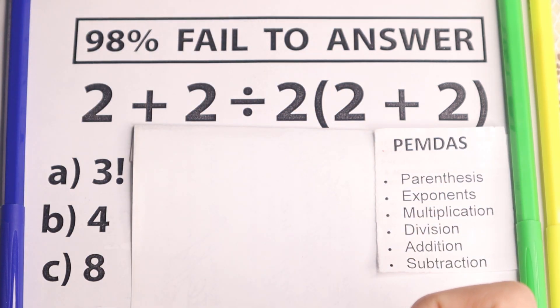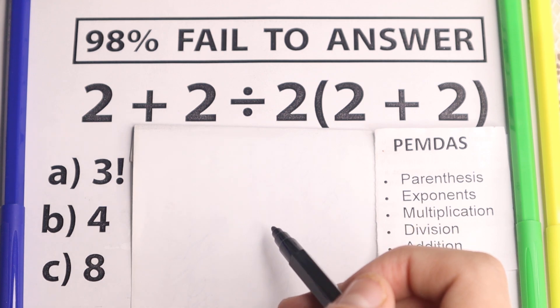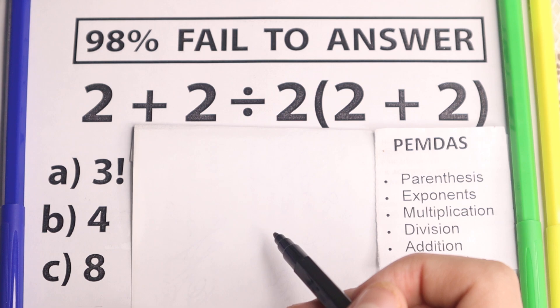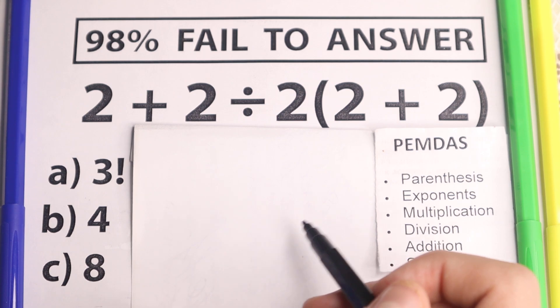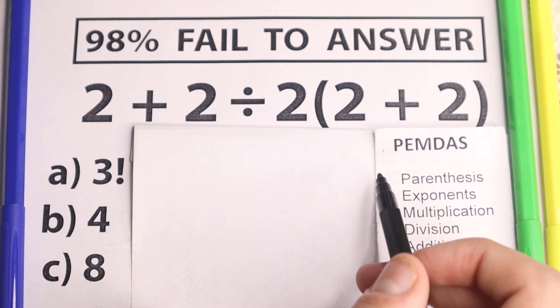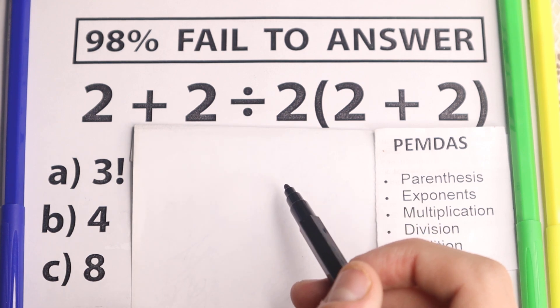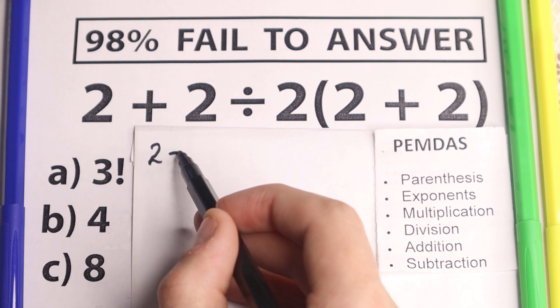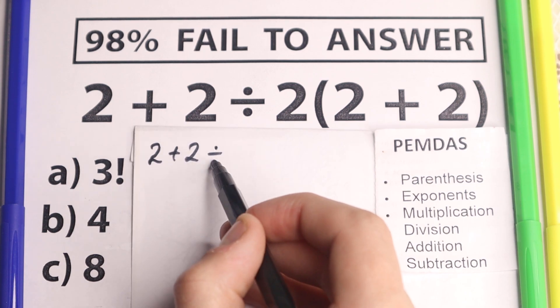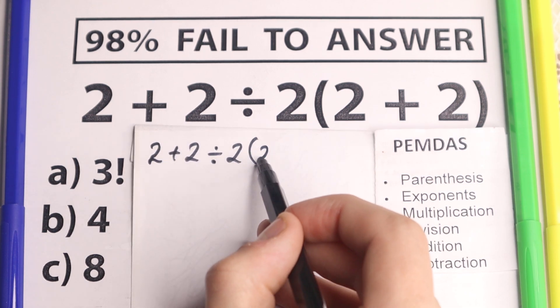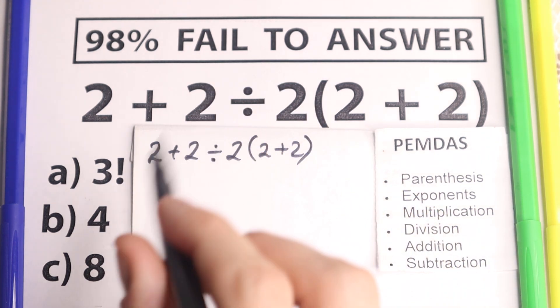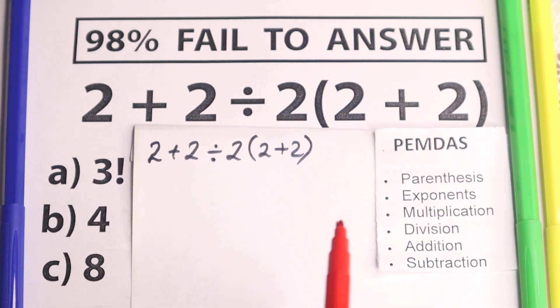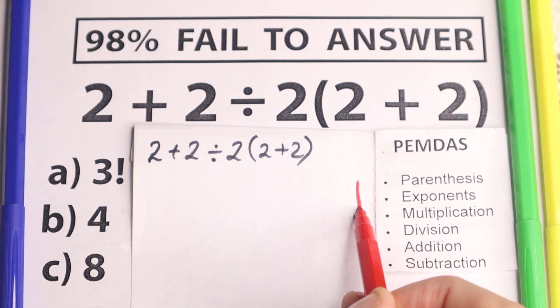And for this question I have this PEMDAS order of operation. This is the main popular order of operation in the world. All internet libraries, scientific graphing calculators work according to PEMDAS. Let's solve this question according to PEMDAS. So I just rewrite this question once more, 2 + 2 ÷ 2(2 + 2). I take my red pen and I want to write that PEMDAS works from the top to the bottom.